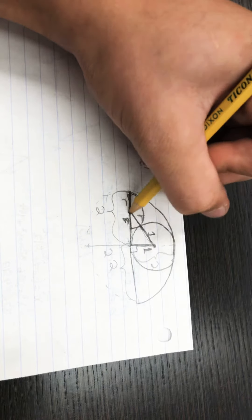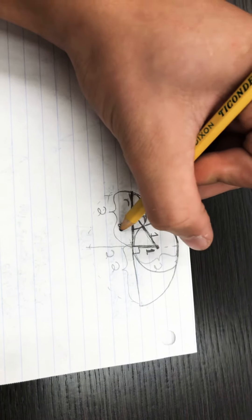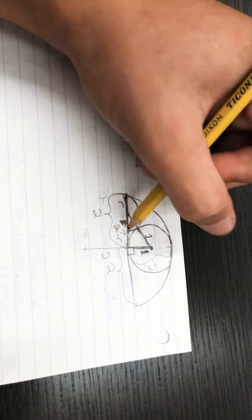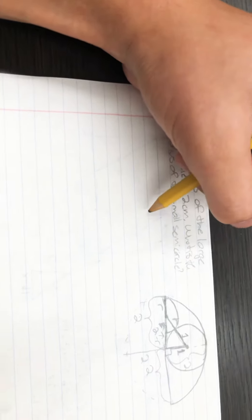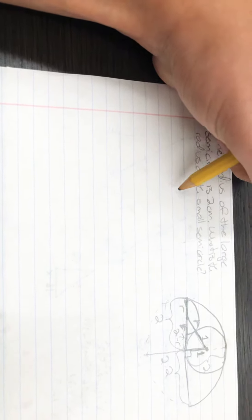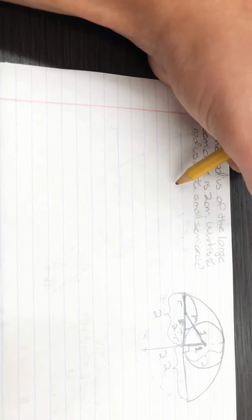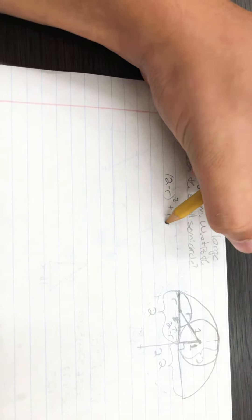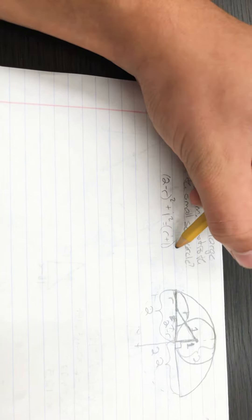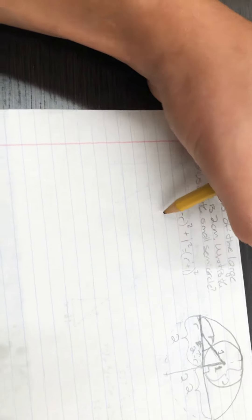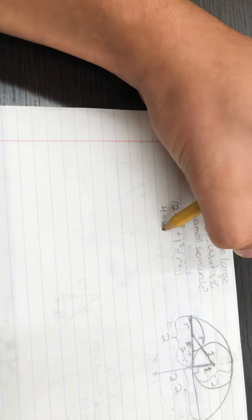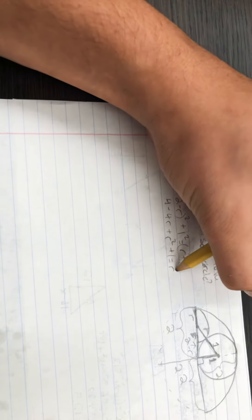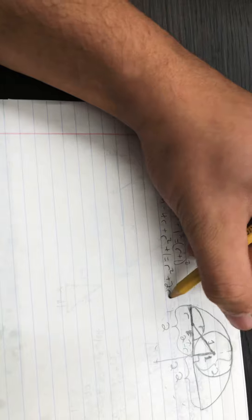I know this length right over here is 2 minus R. I can go ahead and solve using the formula for the Pythagorean triangle. So I have (2 minus R) squared plus 1 squared equals R squared. Okay, so now I have 4 minus 4R plus R squared plus 1 equals R squared.